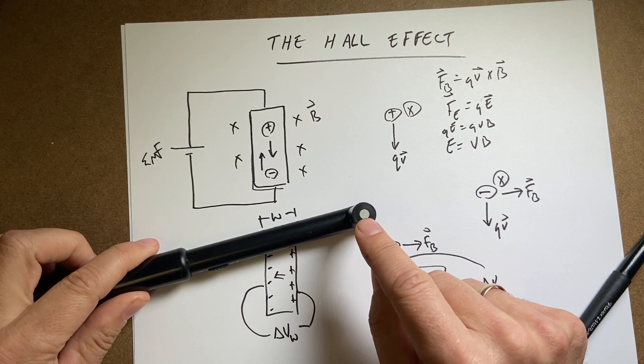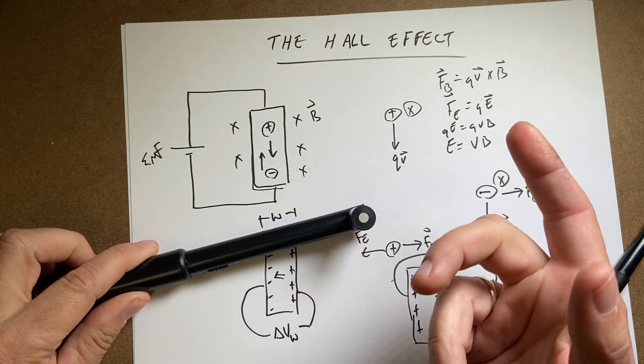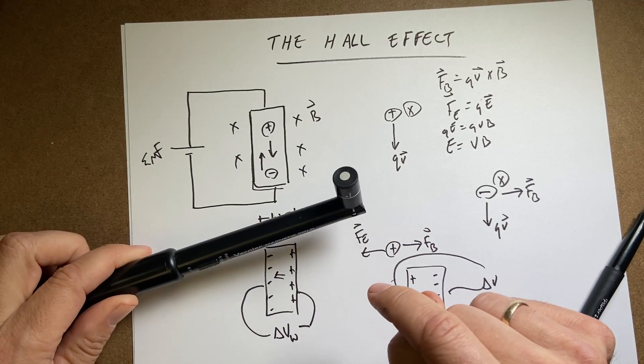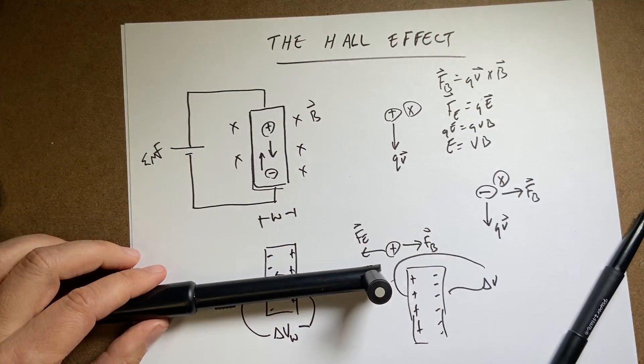Your phone detects a magnetic field and it uses that as a compass. So it has one of those in there too. But it's a very, very small magnetic field detector. And it works pretty well. And it's all based on the Hall effect.